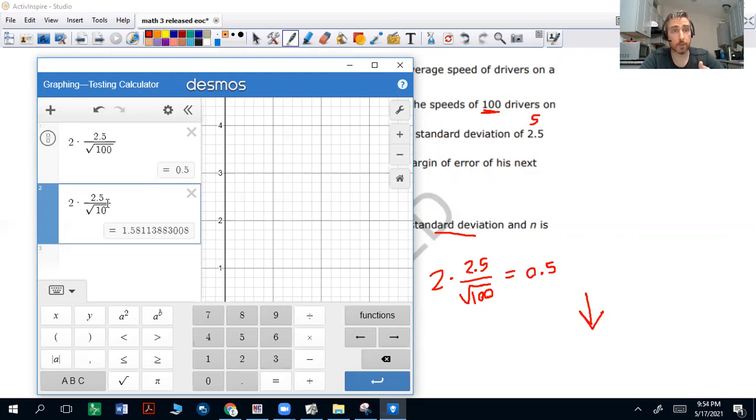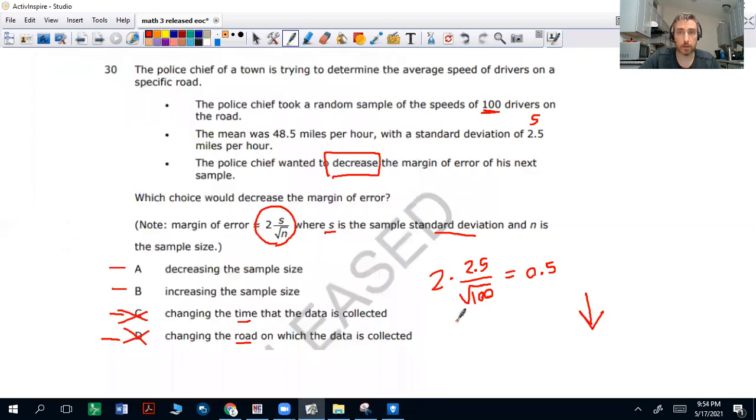So the bigger the sample size, the smaller the margin of error. So if you do two times 2.5 divided by the square root of a number bigger than 100, greater than 100, the margin of error is going to be less than 0.5.